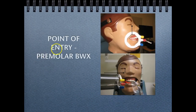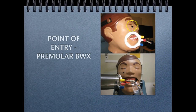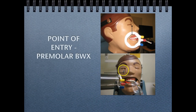For the premolar bite wing, the point of entry is in alignment with the inner canthus. The PID should be in alignment with the inner canthus to obtain the proper image.